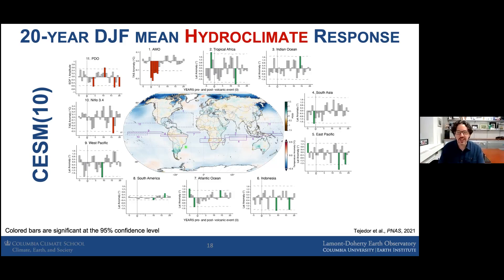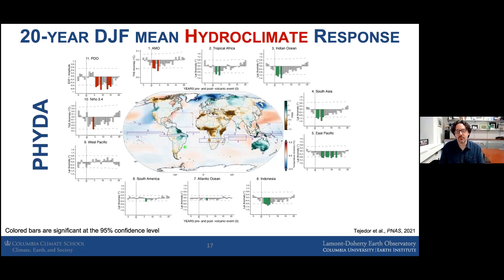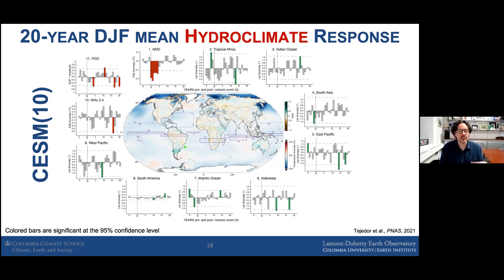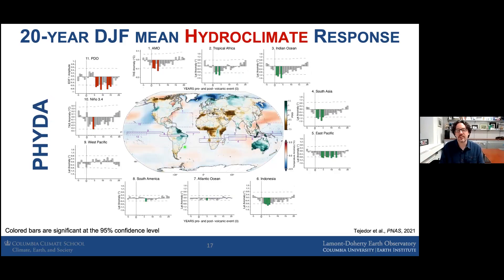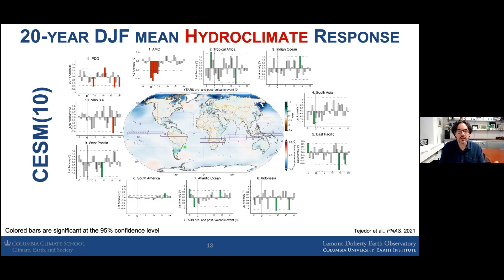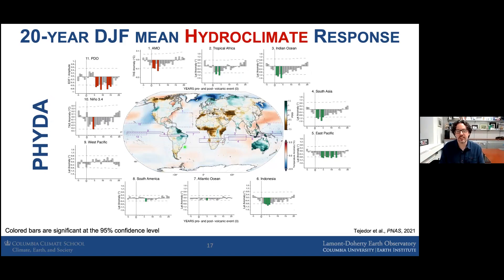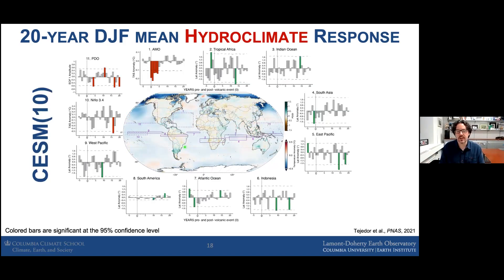Large volcanic eruptions are likely to occur at least sometime during this century based on historical data, so these hydroclimate risk differences between proxies and models are important. People have looked at this in the drought atlases, but we really need to look at the differences between models and proxies and why they're occurring. There are all kinds of reasons this could exist — proxy uncertainties, volcanic forcing uncertainties, how those forcings are implemented in models, and structural uncertainties in models.